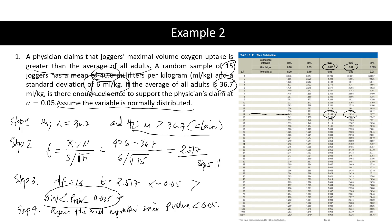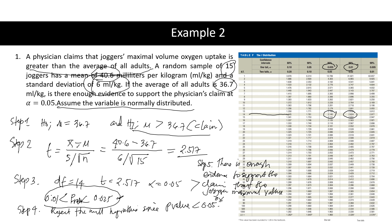Step 5: Summarize the conclusion. There is enough evidence to support the claim that the joggers' maximal volume oxygen uptake is greater than 36.7 ml/kg. That is the solution for this example on finding the p-value using the table.